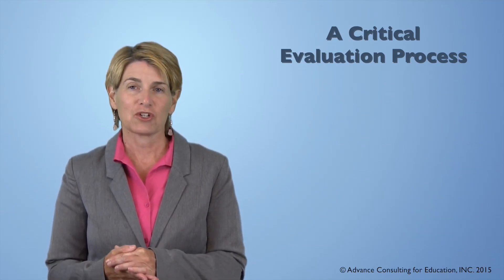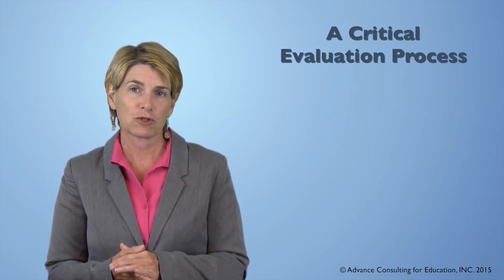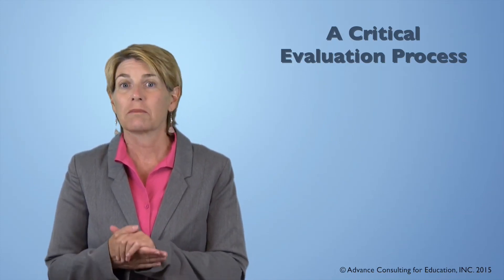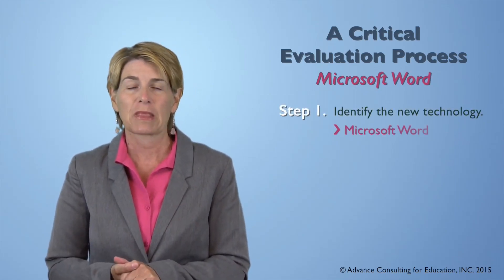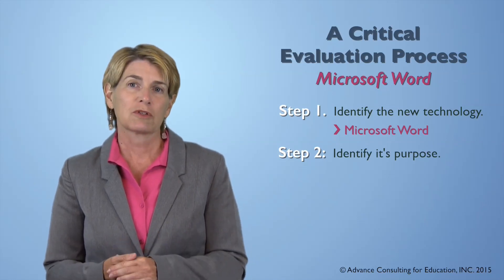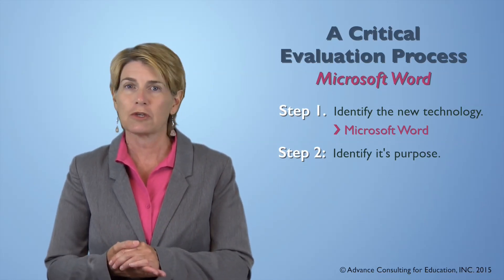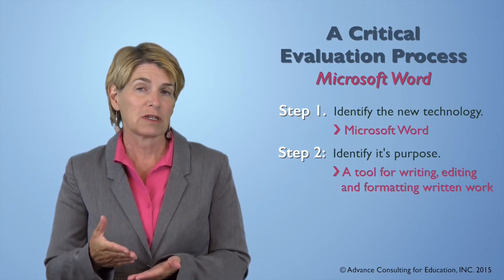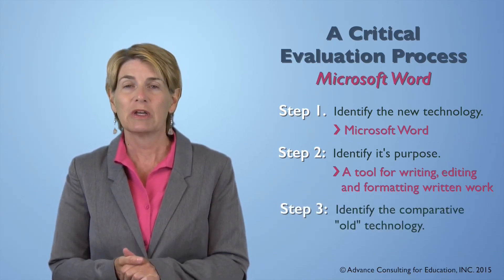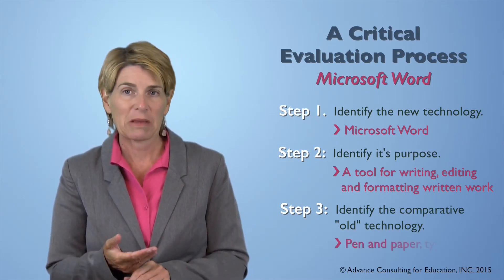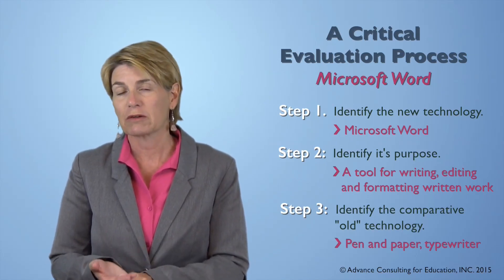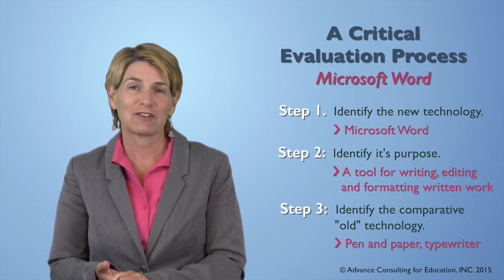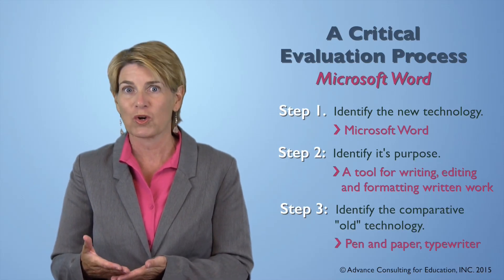I'm going to walk you through a critical evaluation process of a technology for language learning purposes so you can see this process in action. The technology we're going to evaluate together is Microsoft Word. That's step one — here's the technology. Step two: Microsoft Word is word processing software we use to write, edit, and format written documents. Step three: the comparable old technology. That's pretty simple — it's pen and paper, and going further back, the manual typewriter and then the electric typewriter.